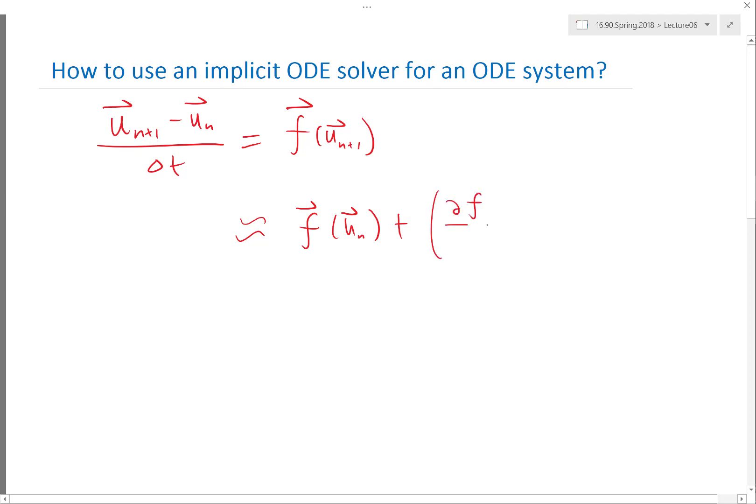You have to write this after this, because this df/du is now a matrix. So you have to write this approximately equal to f of u_n plus partial f partial u. I mean, this is the first time we have partial derivatives, which you will see all the time as we switch to PDEs.